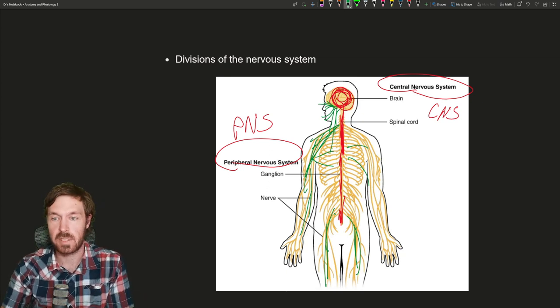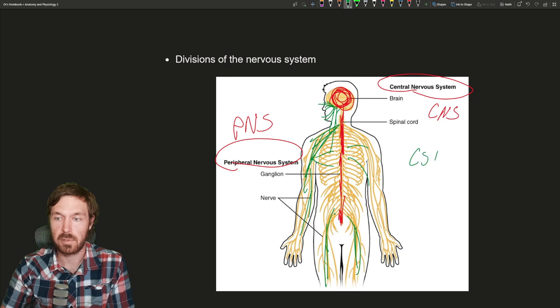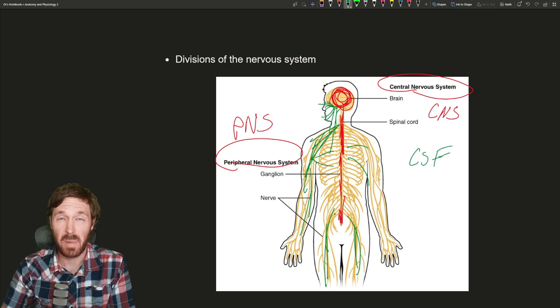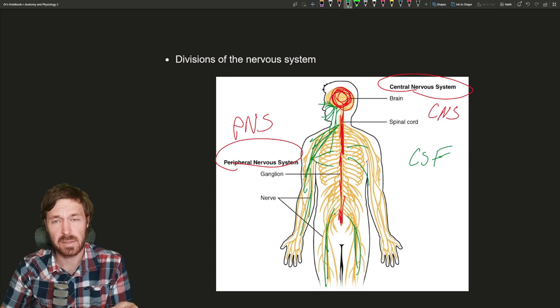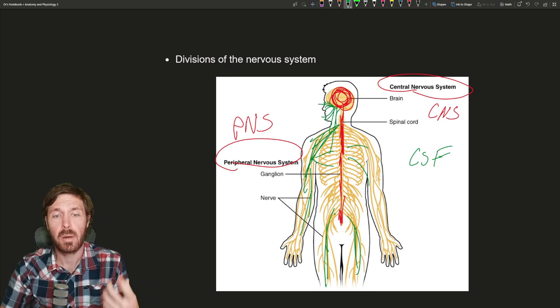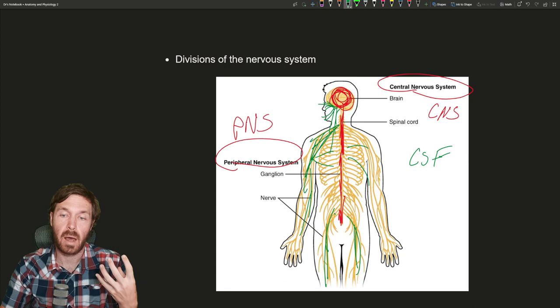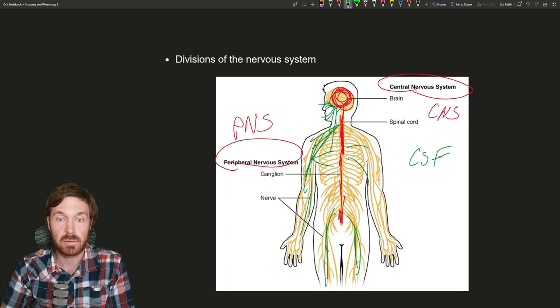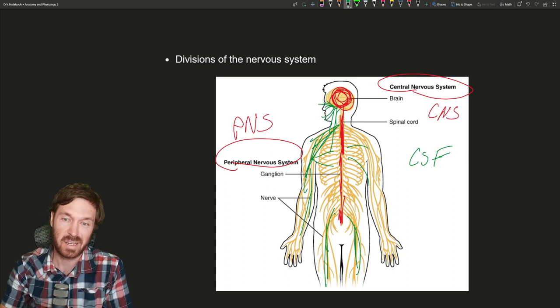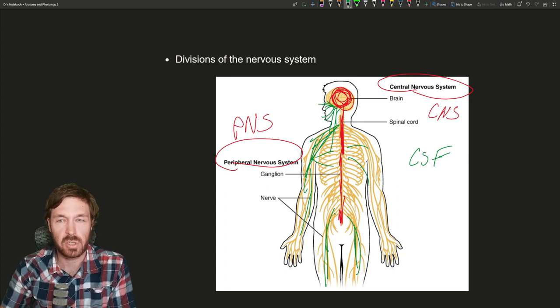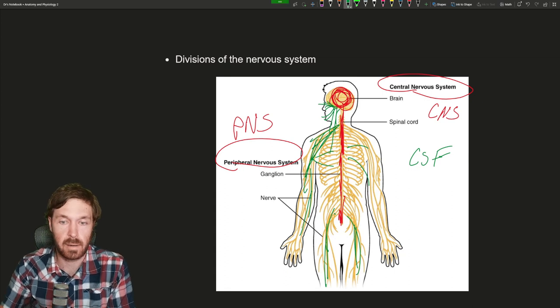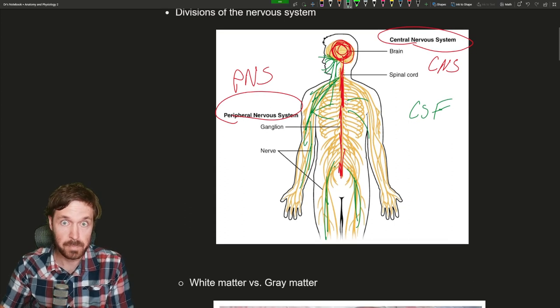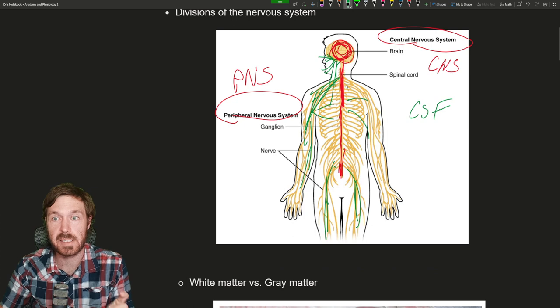There are some differences. Central nervous system has cerebrospinal fluid in it, or CSF, and unique cells found in there. Peripheral nervous system is within the interstitial fluid of the body. There's still neurons in both. Neurons are the functional unit of the nervous system, and we'll talk about the structure of a neuron in the next videos.